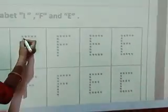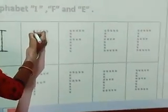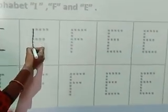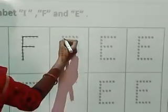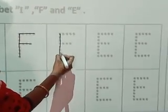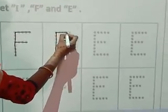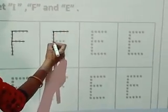This is dotted F. Now we will trace it. Standing line, sleeping line, sleeping line. Now it becomes letter F.